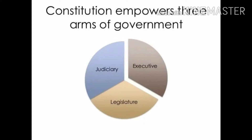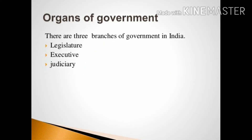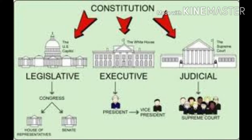You have already read about this in classes 6th, 7th, and 8th in the civics portion. The three branches of the government — we can say that the government cannot work without these organs: Legislature, Executive, and Judiciary. We read each of these separately.